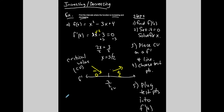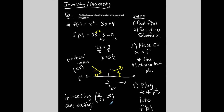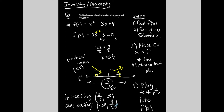You're typically going to write your intervals in interval notation. Here is where the function is increasing and decreasing. It is increasing to the right of 3 halves, so from 3 halves to positive infinity. Always open intervals — always parentheses, never closed. The test points get thrown away; only the critical values go into your intervals. Decreasing is to the left of 3 halves: from negative infinity to 3 halves.